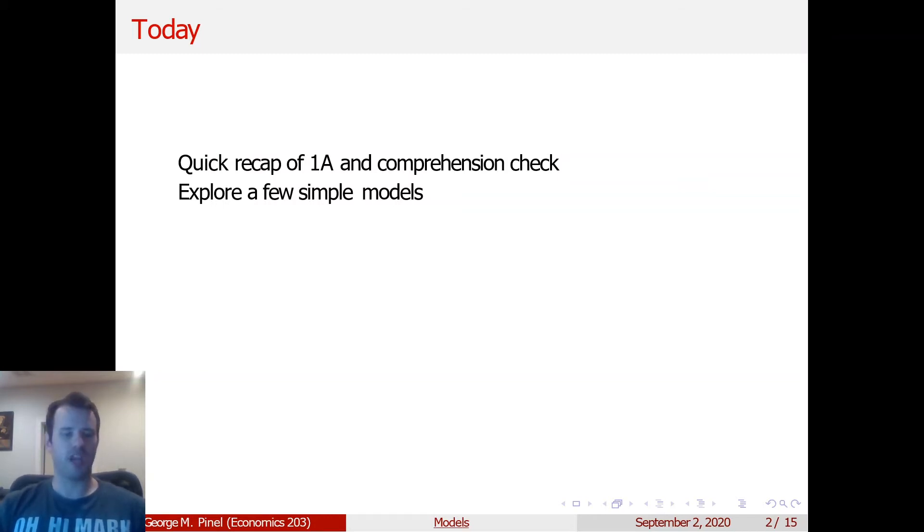And then the third model would be what's called the signaling model, in particular as it relates to a job searcher and whether they should get more education or not. And that's another game theoretic model. So those are the three we're going to be exploring today in depth.